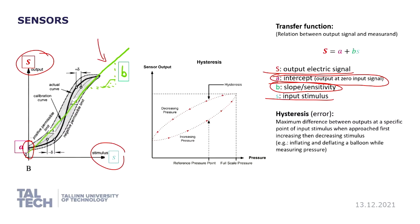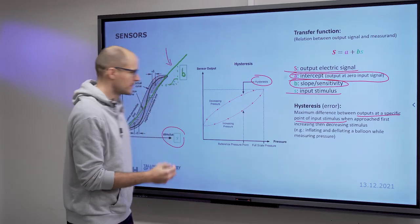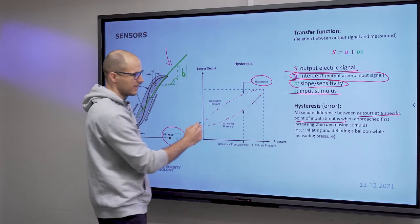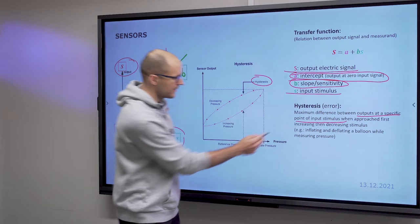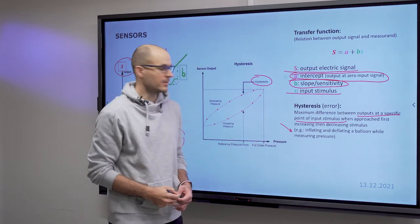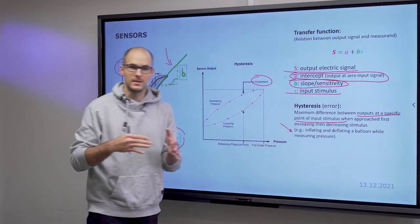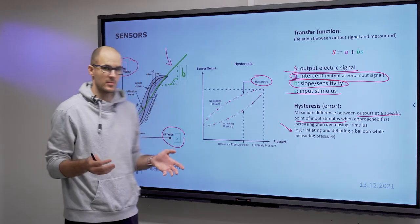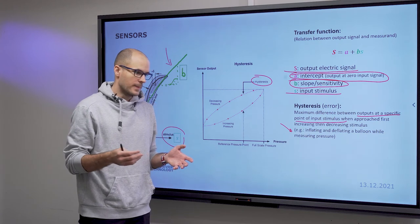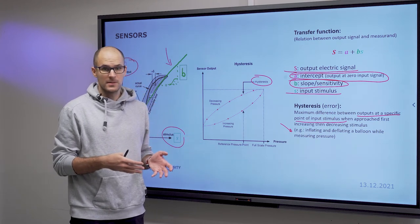And then there's one more thing that we need to talk about, which is the hysteresis, which is a type of error. It is the maximum difference between outputs at a specific point of input stimulus when approached first increasing, then decreasing the stimulus. The example that I would like to give you is inflating and deflating a balloon while measuring pressure.